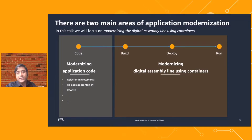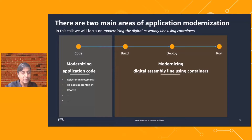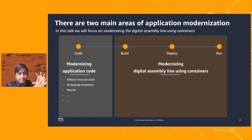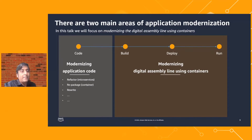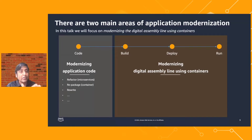We're not going to focus on the code modernization part in this conversation. We will focus on the modernization of the supply chain of the software — the building, shipping, and running of the software. Assuming you are able to create containers and applications in a service-oriented architecture, the question is: how do you modernize the digital supply chain? The primary benefit of modernizing this digital assembly line is accelerating your time to market — shipping software faster and more frequently, and adapting to changing market needs.